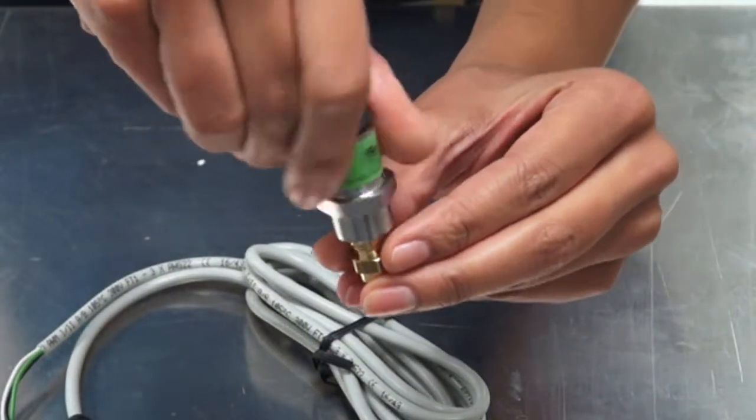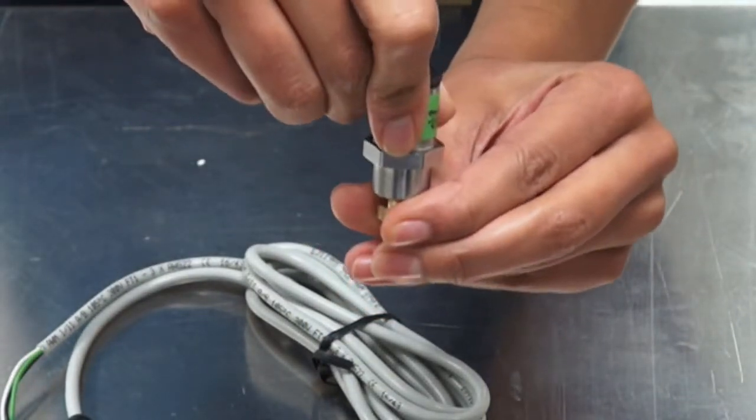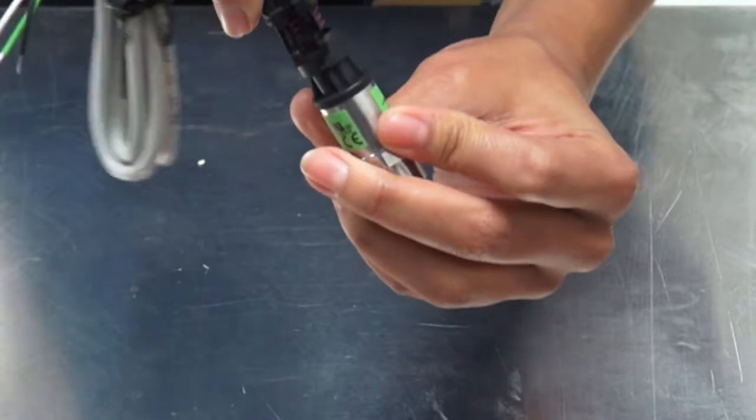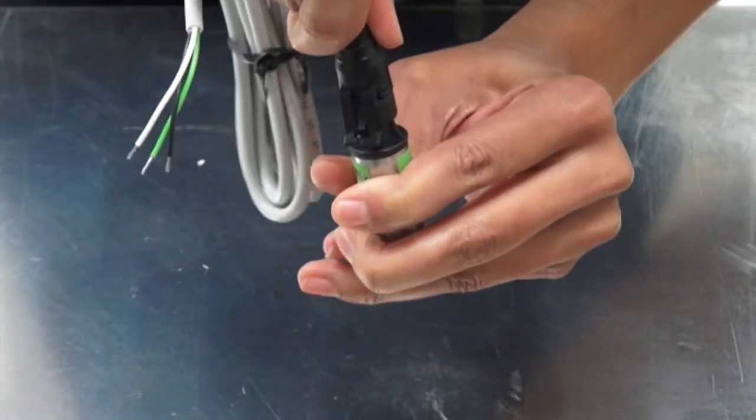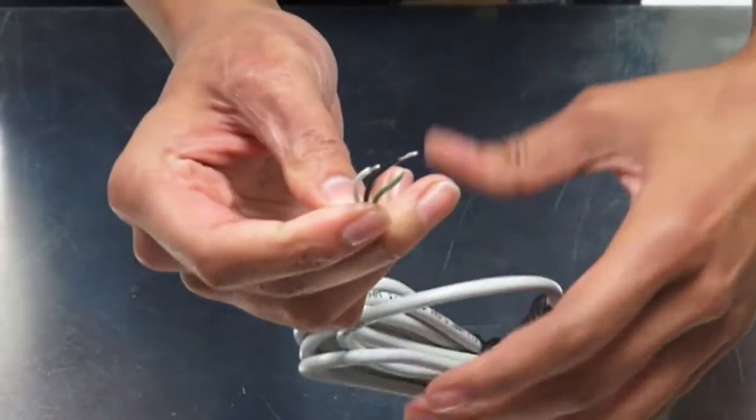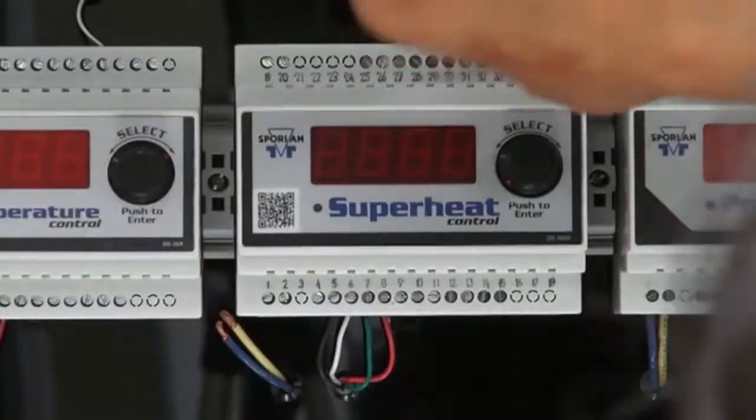This is our SAE fitting. We're going to attach the transducer to the top like this, then snap on our cable, and then we can connect the white, green, and black wires to terminals 33, 34, and 35.